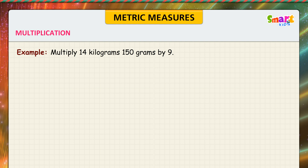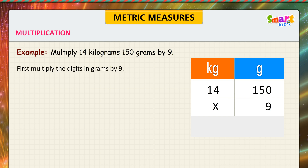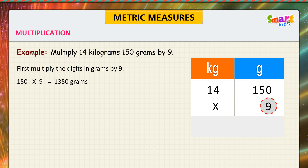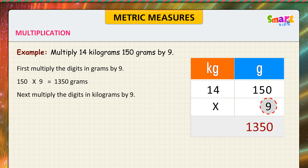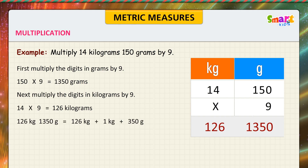Multiply 14 kilograms 150 grams by 9. First, multiply the grams by 9: 150 times 9 is equal to 1350 grams. Next, multiply the kilograms by 9: 14 times 9 is equal to 126 kilograms. Now convert: 126 kilograms 1350 grams equals 126 kilograms plus 1 kilogram plus 350 grams, which equals 127 kilograms 350 grams.